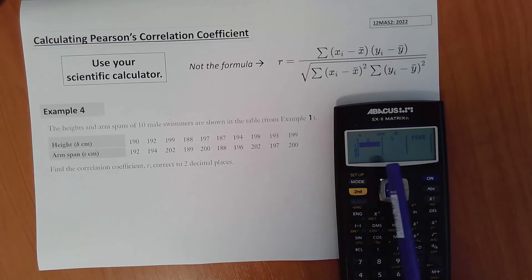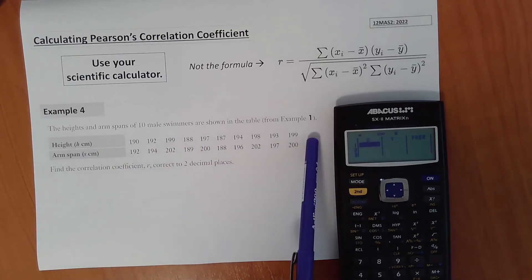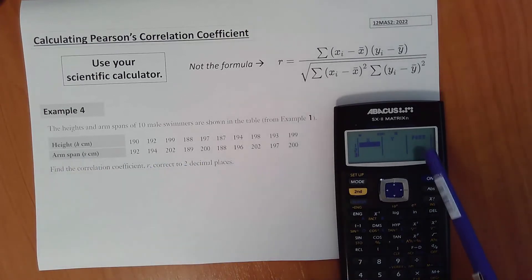Press number 2 and then we get our data entry screen where we'll enter the X values, which in this case are the height, the Y values, arm span, and if you like you can enter frequency, but by default that will come up as 1. After we've done that, we just go down directly into our stat var button and we'll calculate R.